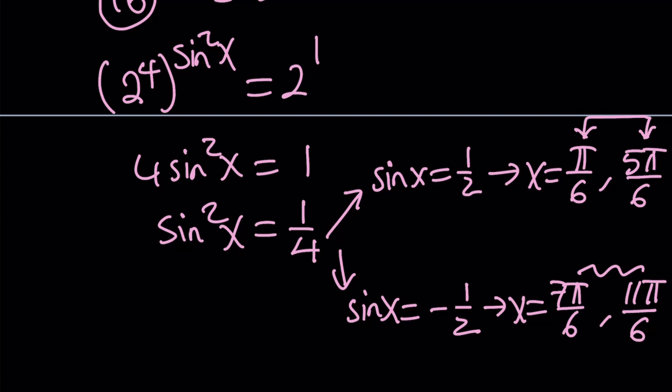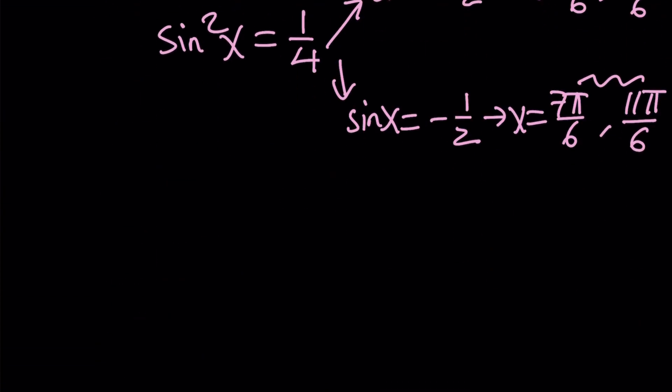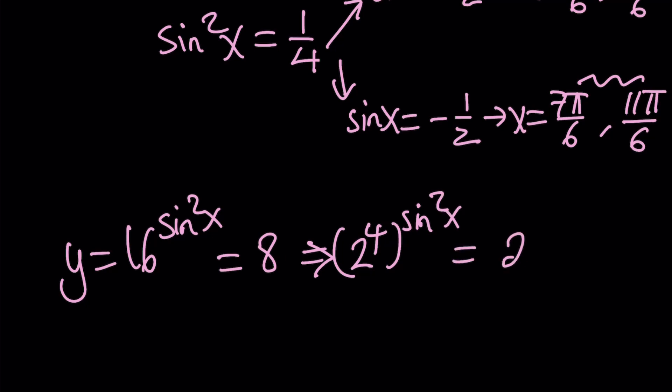And now we're going to replace y with 8. y again is 16 to the power sine squared x. If it's equal to 8, this one is a little different because we have to write both numbers as powers of 2. So this is 2 to the 4th, and this is 2 to the 3rd. This gives us 4 sine squared x equals 3.